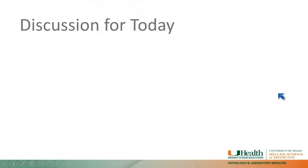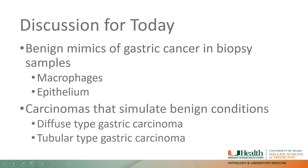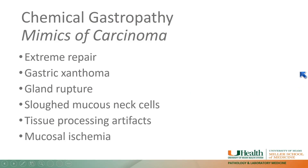I have no conflicts to report. Today in this discussion, we're going to focus on two broad categories: benign mimics of gastric cancer in biopsy samples — talking about macrophages and epithelial mimics — and then carcinomas that simulate benign conditions, including both diffuse-type and tubular-type carcinomas. Let's start off with benign mimics of carcinoma.